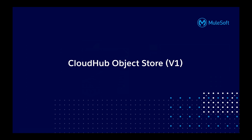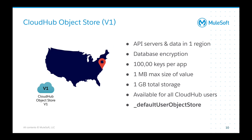Next, let's talk about the CloudHub object store — version 1. This was the first release of an object store within CloudHub. One of the major limitations was that it was only accessible from the US East region. So if you deployed your application to US West, when it referenced the object store, it would have to make a call to US East to retrieve the value. It had basic database encryption, and there was a limit of 100,000 keys per application.